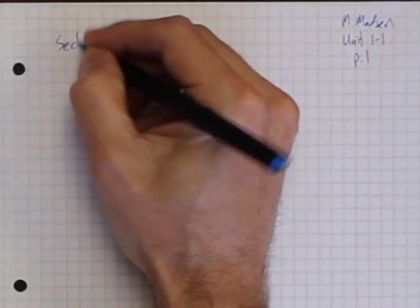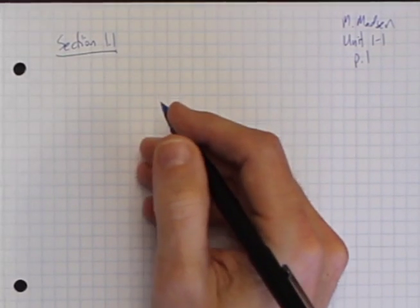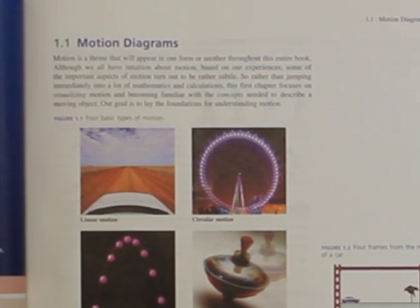I will write down the section number, section 1-1, at the top of each page when I reach new sections, and then I'm going to go through and read the material in the book, read the paragraphs, and look through the key ideas.